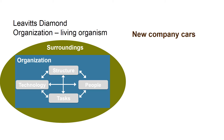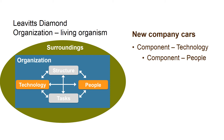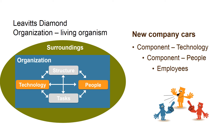New company cars — again we start in the component Technology. It quickly affects the component People, because those receiving the new company cars will hopefully be more satisfied. The problem is that those who do not get a new car may be a little disappointed. So the manager is going to work a lot more with the employees in the component People when introducing new cars than with the component Technology.